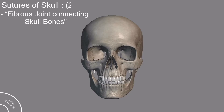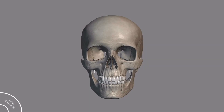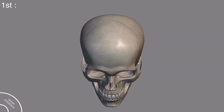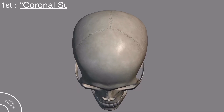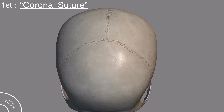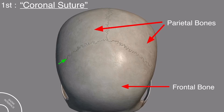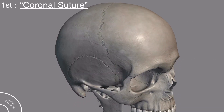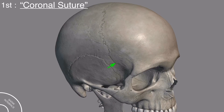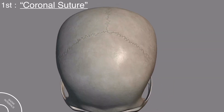There are 21 sutures of the skull that we will discuss here. The first one is the coronal suture. This whole suture which separates the frontal bone from the parietal bones is the coronal suture, and it extends up to here on both sides. The coronal suture is named because it lies in the coronal plane.